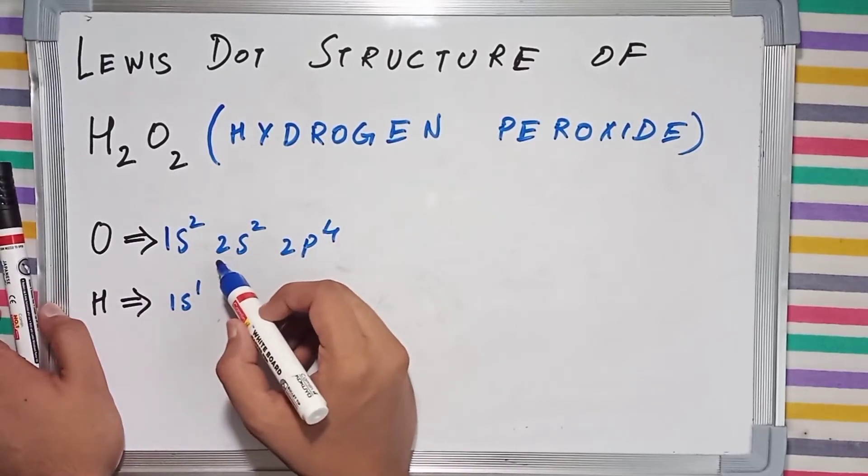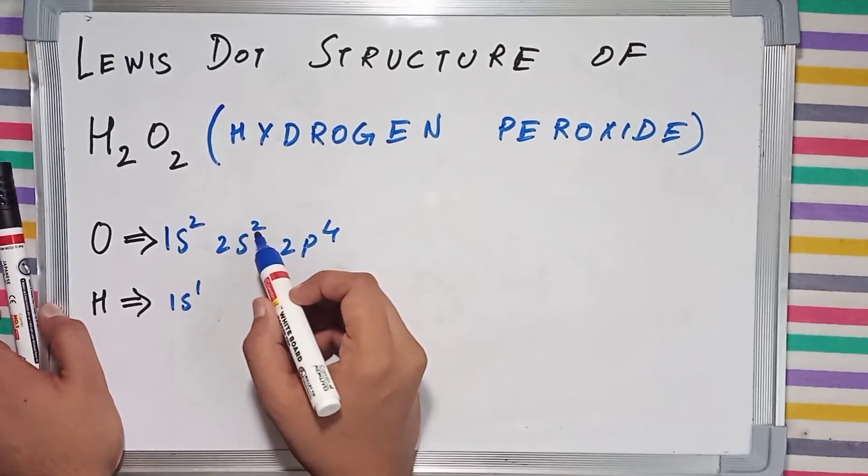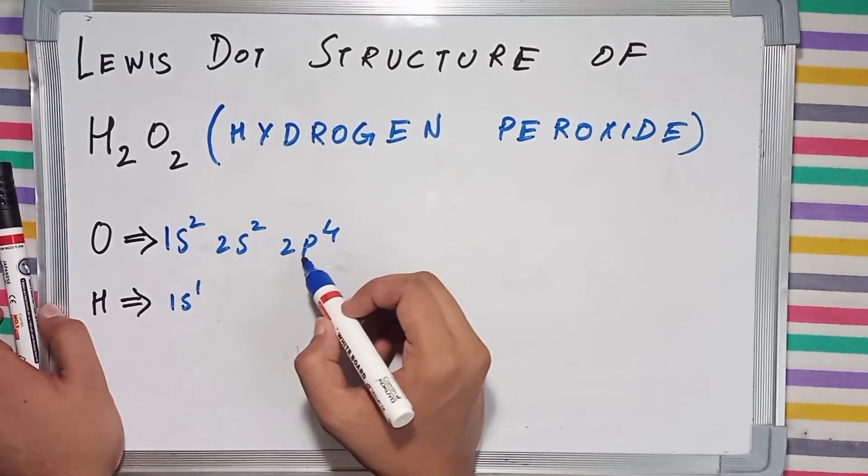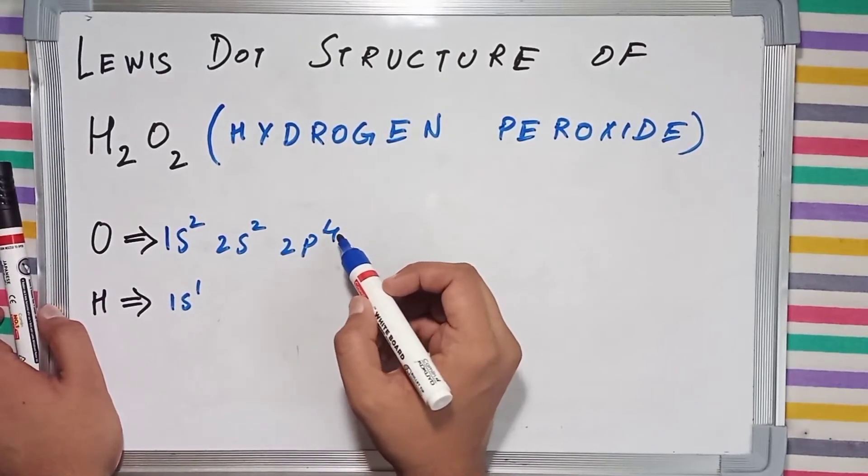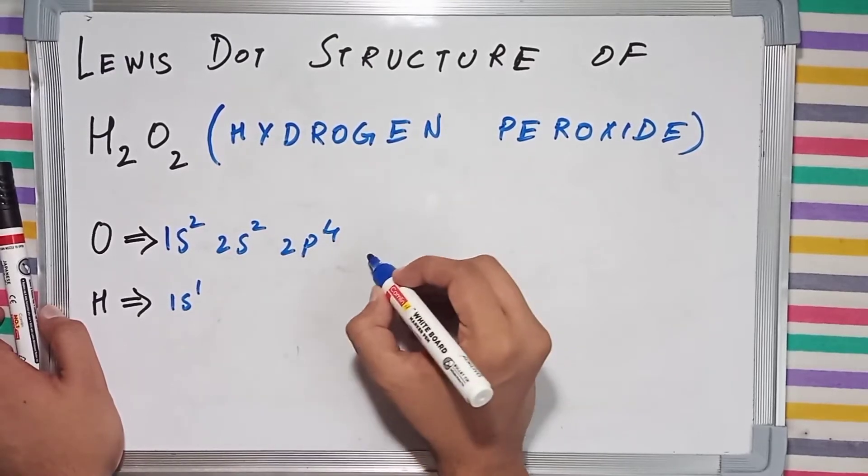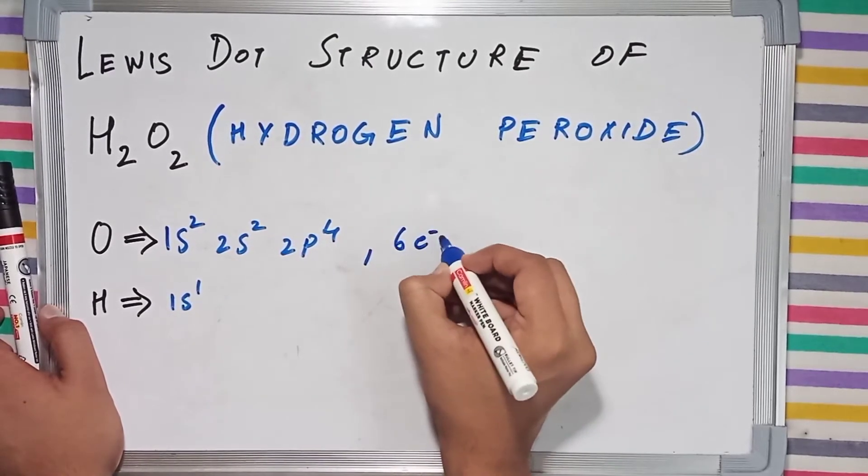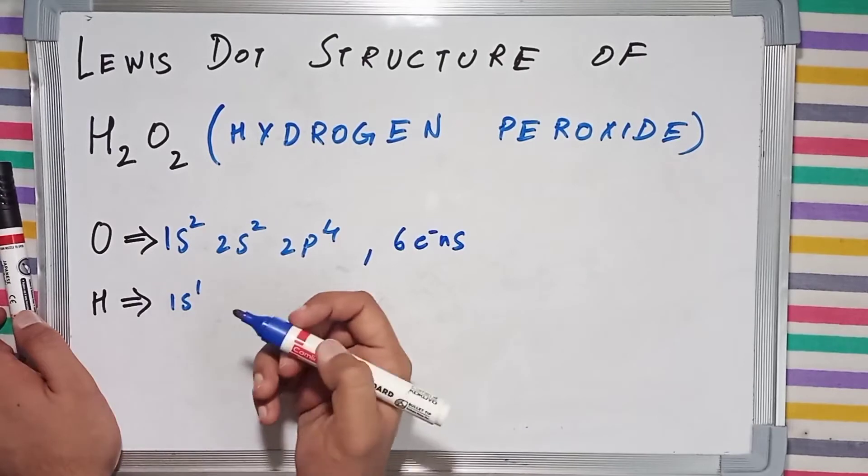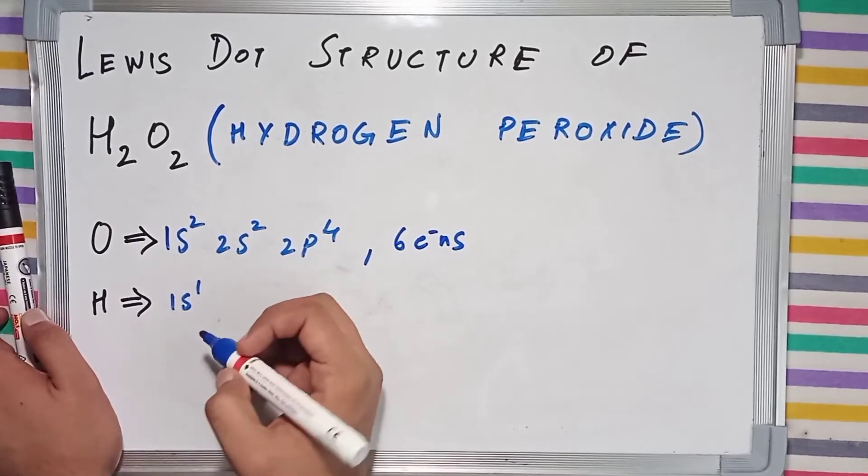As you can see, in the 2S subshell it has 2 electrons and in the 2P subshell it has 4 electrons, which equals 6 electrons. And hydrogen has a single valence electron.